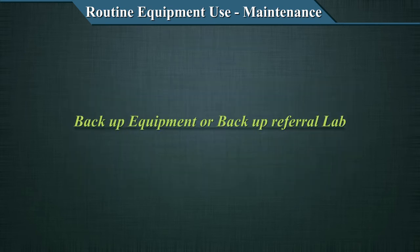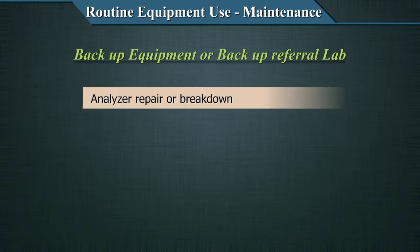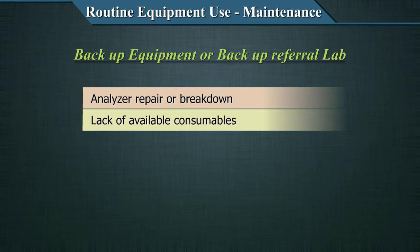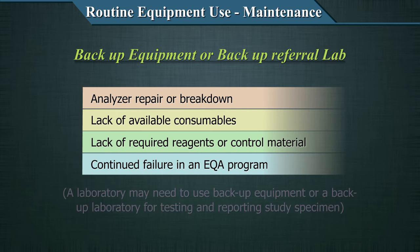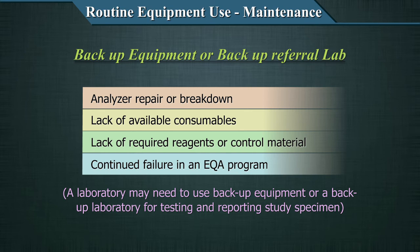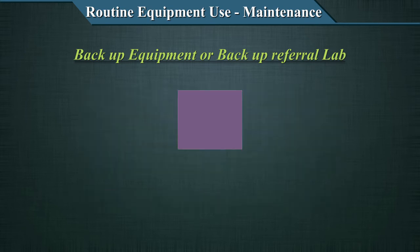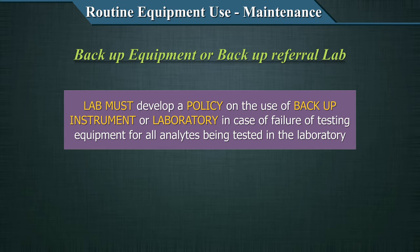The next concept is backup equipment or backup referral labs in the case of breakdown. In certain circumstances — such as analyzer repair or breakdown, lack of available consumables, lack of required reagents or control materials, or continued failure — a laboratory may need to use backup equipment or a backup laboratory for testing and reporting. The lab must develop a policy for use of backup instruments or laboratories in case of failure of testing equipment for all analytes being tested.